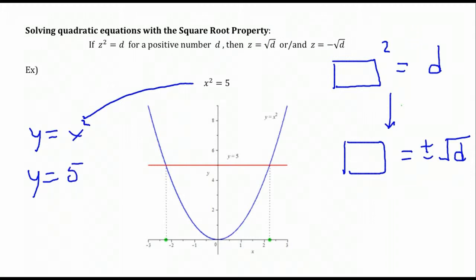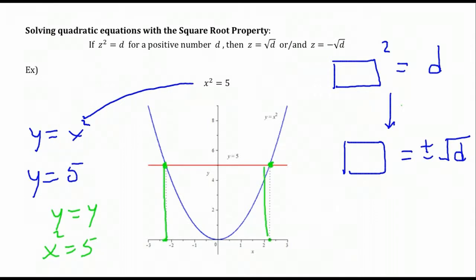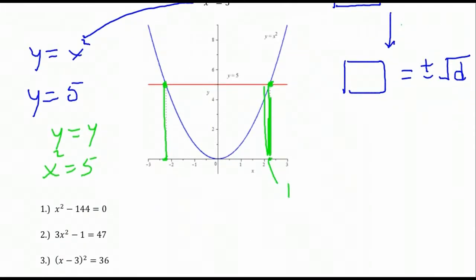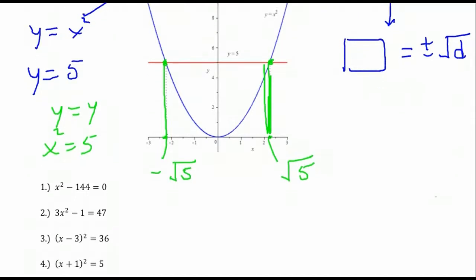Graphically speaking, we can view the left-hand side as the graph of an equation y equals x squared. Likewise, the right-hand side, y equals 5, that's a horizontal line. Where the horizontal line at height 5 intersects the parabola y equals x squared, the y components of those points of intersection are the same, and therefore the x components are the same. If we scroll down to the x-axis, you see those two solutions from the square root property — the positive and negative square root of 5, between 2 and 3, and between negative 2 and negative 3.